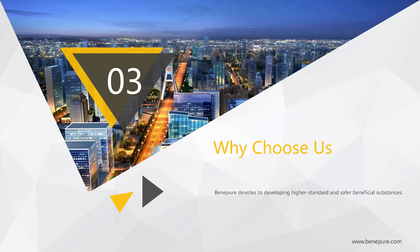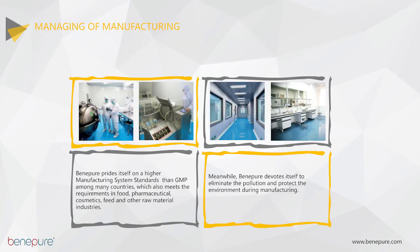Why choose us? Benipure's manufacturing and food processing facility operates in conformity with international guidelines and is outfitted with state-of-the-art processing machinery, which can meet the requirements of food, pharmaceutical, cosmetic, feed and other raw material industries. At the same time, we devote ourselves to eliminating pollution and protecting the environment during manufacturing.